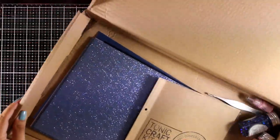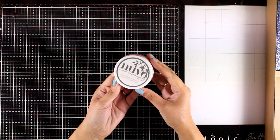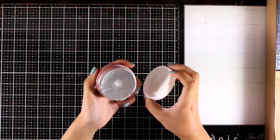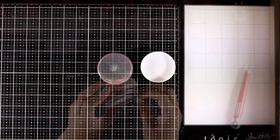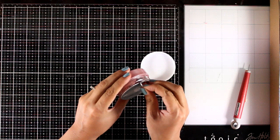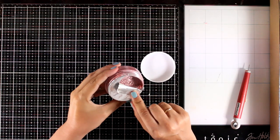First of all, you will get a regular jar of Nouveau Mousse. The color is Victorian Blush, and here is what I do to make sure that Nouveau Mousse is not going to dry out on me.